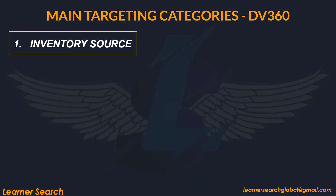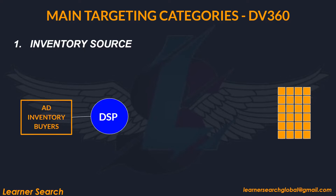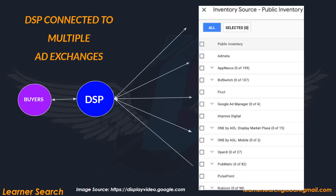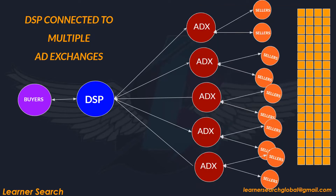Inventory Source Targeting: Ad inventory buyers purchase inventory from the publisher or the sellers. To do that, they connect to the demand side platform, and the DSP connects to the ad exchanges. DSPs connect to multiple ad exchanges like AppNexus, Google Ad Manager, OpenX, Pubmatic, PulsePoint, Rubicon, etc. These ad exchanges connect to sellers on the other end and they get the inventory.